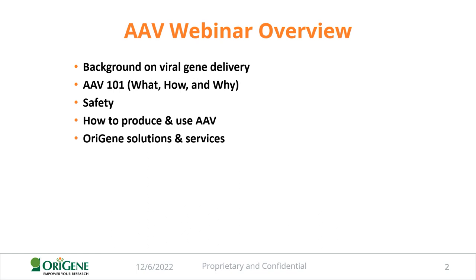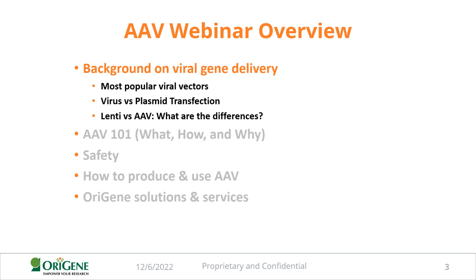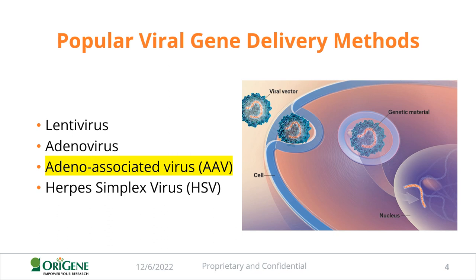Starting with the background on viral gene delivery, I'm going to talk about the most popular viral vectors, viruses versus plasmid transfection, and then Lenti versus AAV, since these are the two most popular options. The most popular viruses used for gene delivery include Lentivirus, Adenovirus, Adeno-associated virus, and Herpes simplex virus. Lentivirus is the most popular, but AAV is a close second and its popularity continues to grow — definitely an avenue to consider.